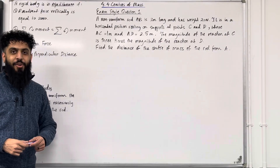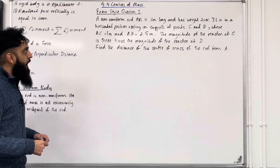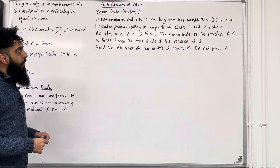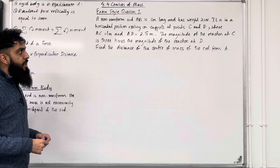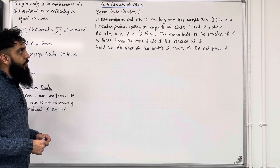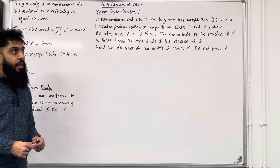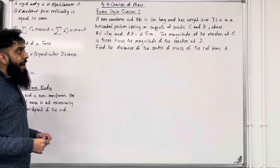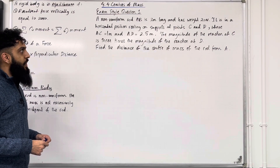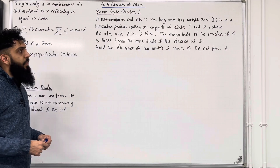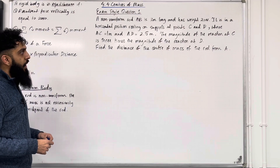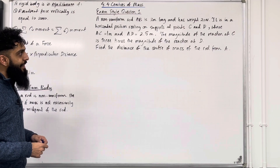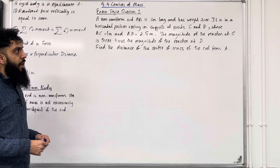Let's have a look at exam style question one. A non-uniform rod AB is 3 metres long and has weight 20 Newtons. It is in a horizontal position resting on supports at points C and D, where AC is equal to 1 metre and AD is equal to 2.5 metres. The magnitude of the reaction at C is 3 times the magnitude of the reaction at D. Find the distance of the centre of mass of the rod from A.